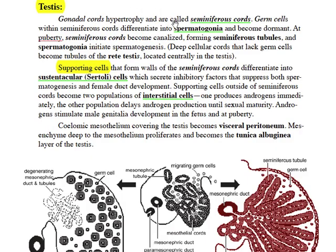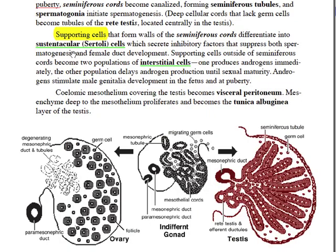In the testis, cords of supporting cells elongate, becoming seminiferous cords, and the germ cells become spermatogonia. There are two types of supporting cells in testes: sustentacular (Sertoli) cells and interstitial cells. The Sertoli cells form the walls of the seminiferous cords and are responsible for converting germ stem cells into spermatogonia — otherwise, germ stem cells would become oogonia by default. The sustentacular cells also release a hormone that suppresses female duct development. The interstitial cell lies outside of the seminiferous cords and tubules and releases testosterone.